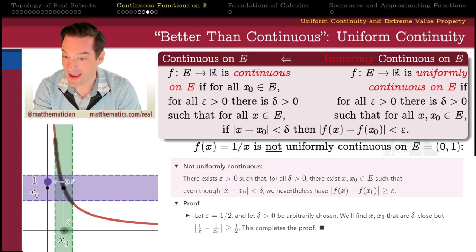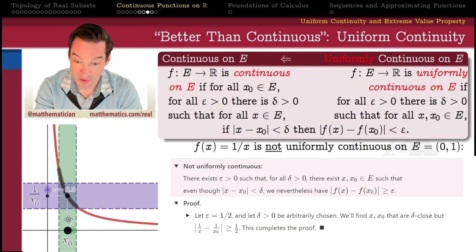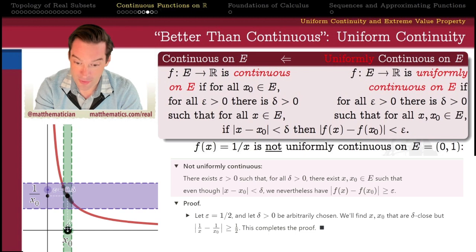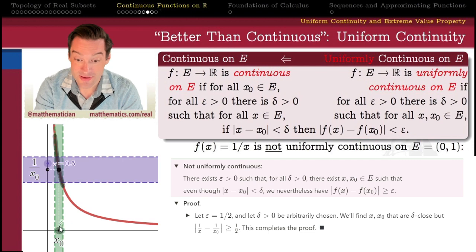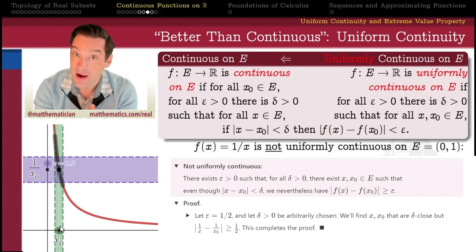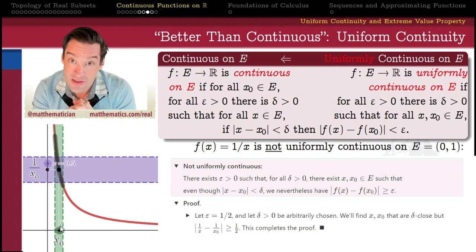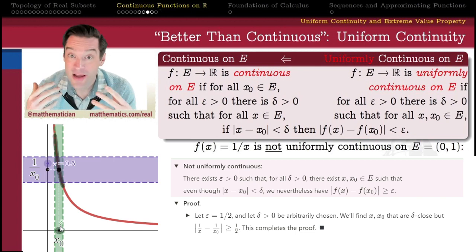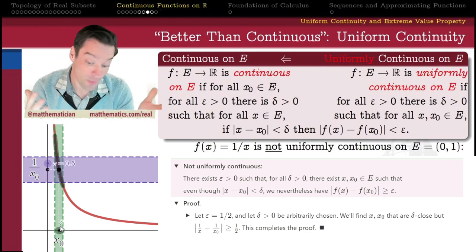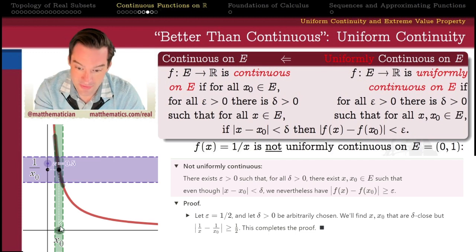I'm going to choose epsilon equals 1/2 — it matches the picture I have. Because it looks like, for epsilon equals 1/2, there is going to be some way, no matter how delta has been picked, to pick my x and x₀ such that the delta-close points do not have epsilon-close images. This choice is going to give me a convenient way of picking x and x₀ in just a moment. We could modify this argument slightly for whatever epsilon you pick — one, point one, whatever — but I'm picking 1/2 just to give me a place to start.